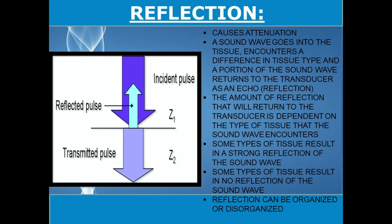Anechoic means no reflection, and these are black structures on the ultrasound. Hypoechoic means a weak reflection, and these are our darker gray structures. Isoechoic means the tissue reflects the same amount as the fat in the body, and these are our medium gray structures. Hyperechoic means that the tissue greatly reflects the sound wave, and these are our light gray to white structures on ultrasound. Note that reflection can be either organized or disorganized.